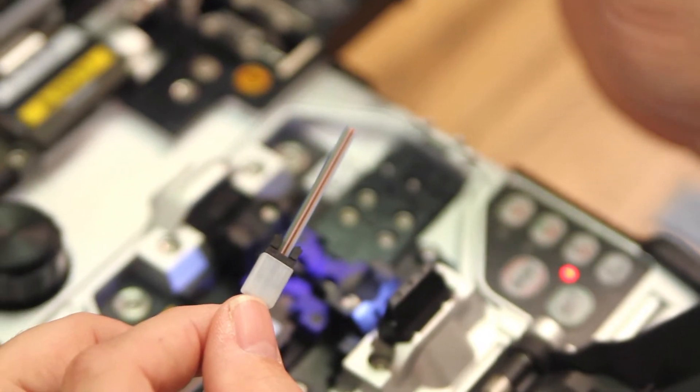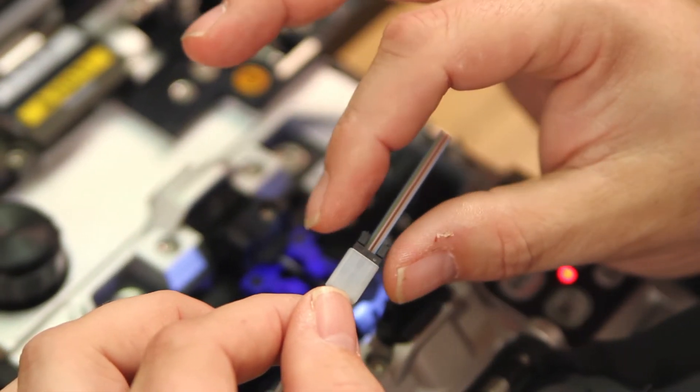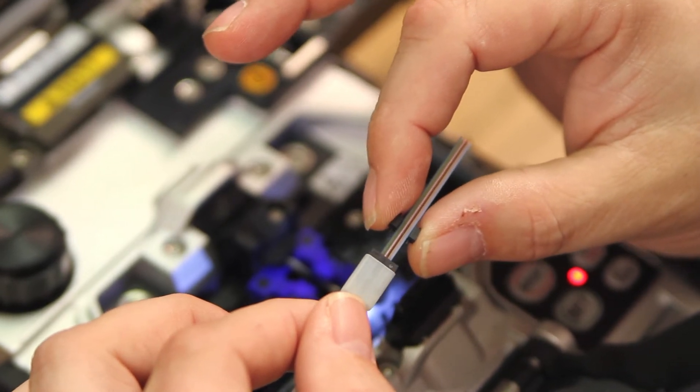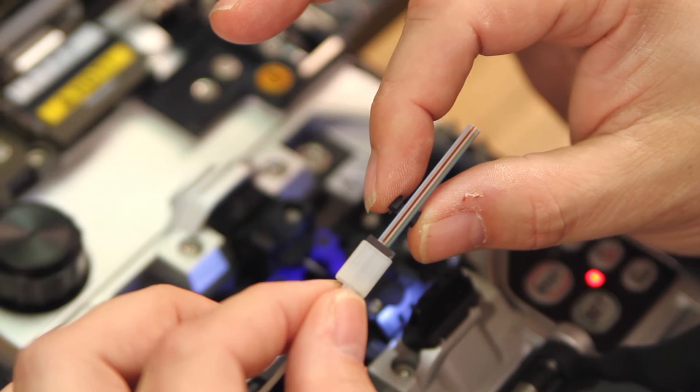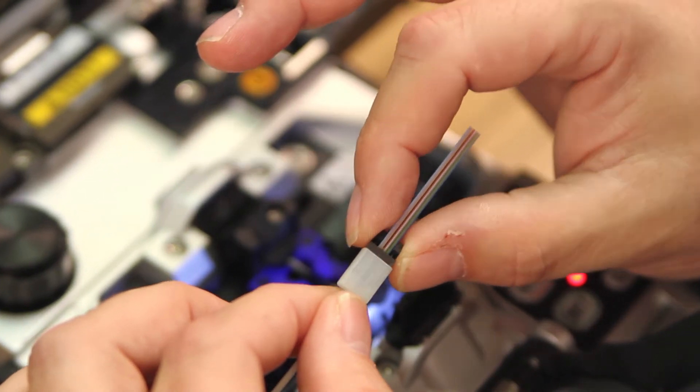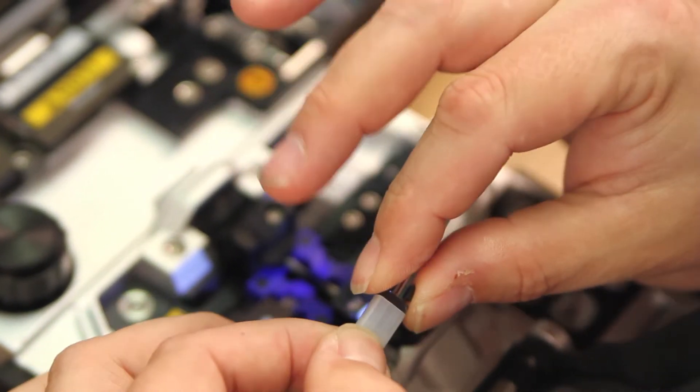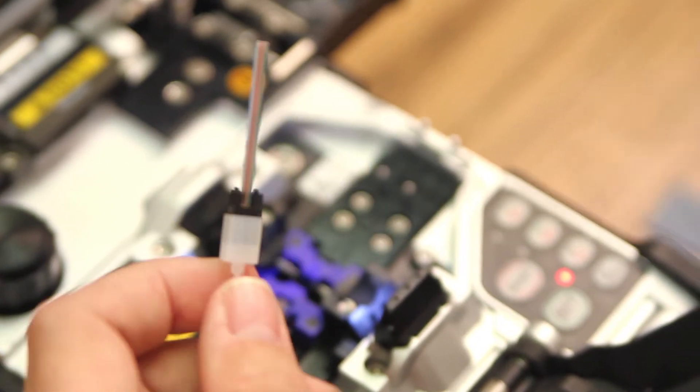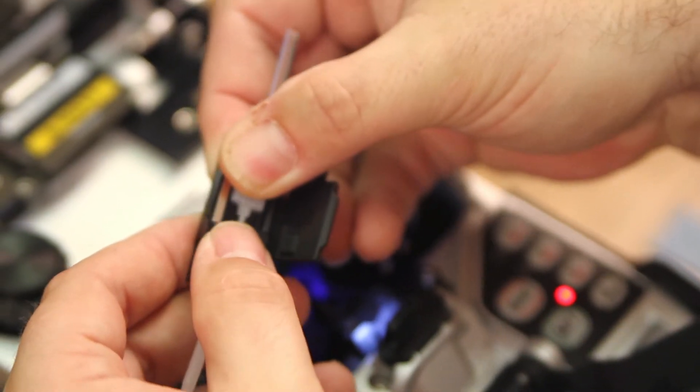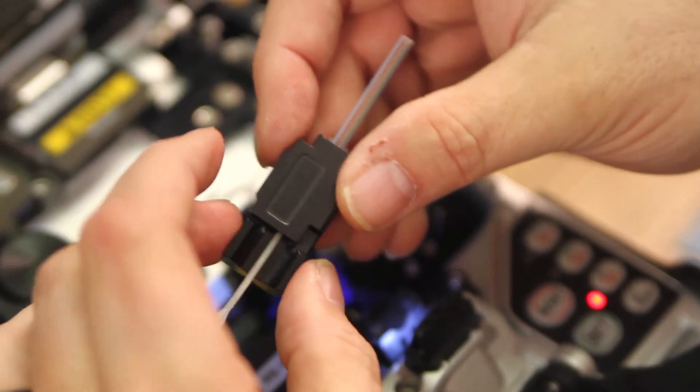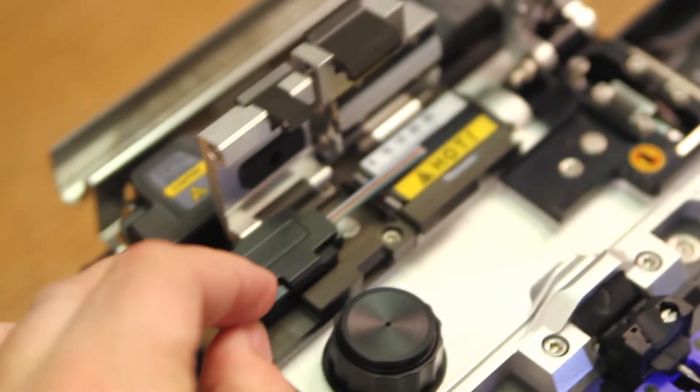Next, prepare your connector. To change polarity, remove the back piece. Rotate your connector. Replace your back piece. Insert into your holder. Place inside your stripper.